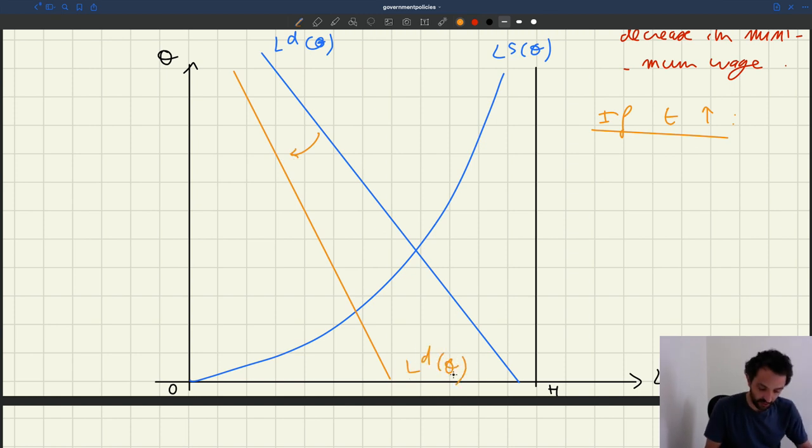So if your payroll tax goes up, you're going to depress your labor demand. So your old equilibrium, which was here, is going to move to a new equilibrium, which is here. So you'll have lower tightness. Tightness is going to fall. Employment is going to fall.